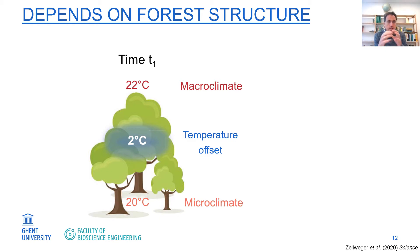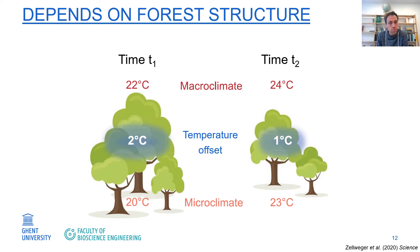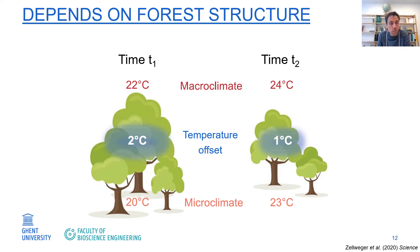The answer depends on the forest structure. Imagine two forests: at time one, the canopy is quite dense, the outside temperature in summer is 22°C, and with a 2-degree offset, the forest floor temperature is 20°C. Several decades later, a few trees were cut. The macroclimate has warmed by 2 degrees, so it's 24°C outside, but the offsetting is reduced. In this example the microclimate is then 23°C — so microclimate warming exceeded macroclimate warming. The opposite is also possible: if more trees grow, the forest canopy can densify.